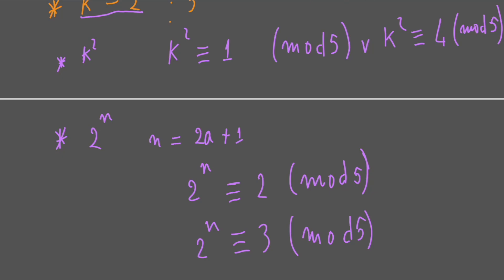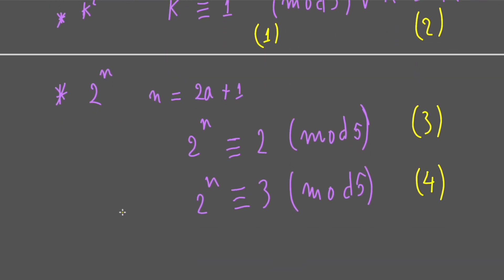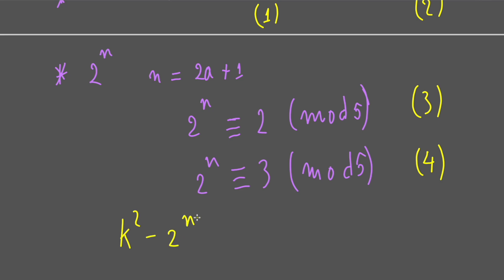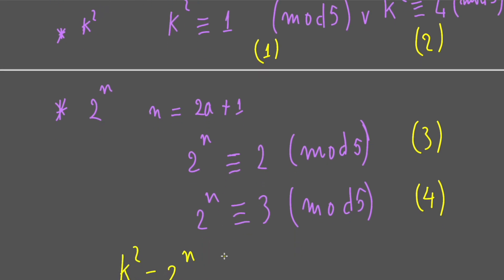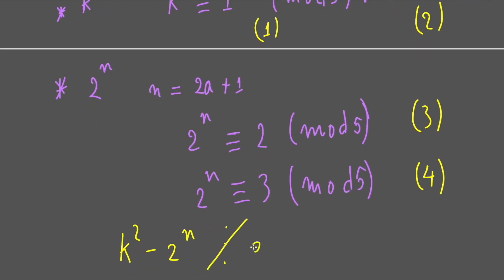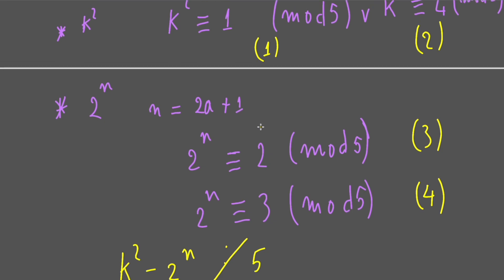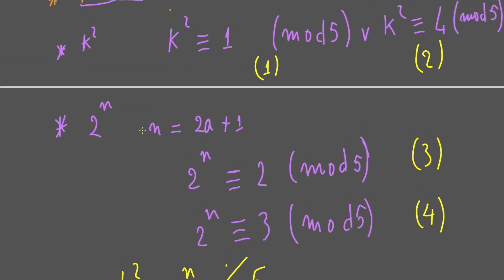Obviously from the first one, the second one, the third and the fourth one, we combine them together by this expression k^2 - 2^n, they all cannot divide by 5. That's impossible. So this means, this means in this case n cannot be an odd number.